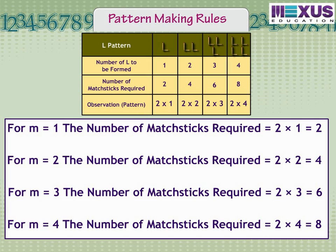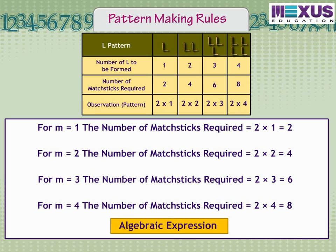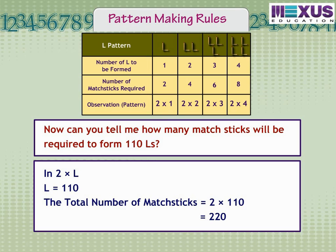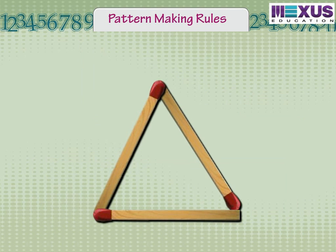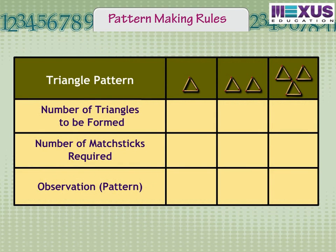Such an expression which contains a number and a letter is called an algebraic expression. Now, can you tell me how many matchsticks will be required to form one hundred and ten Ls? Using the expression two times L, the number of matchsticks required to make a pattern of 110 Ls will be two times 110, which is equal to 220 matchsticks. Let us try to make a triangle using matchsticks and also prepare a table accordingly.